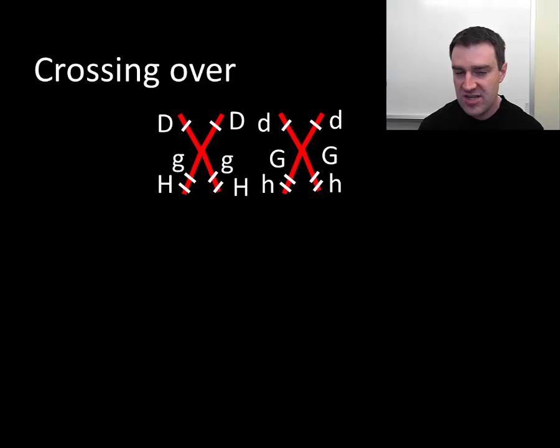So whatever genes happen to be located very close to the tips might actually exchange their alleles just on the inner chromatids. So that's what I tried to show right there.